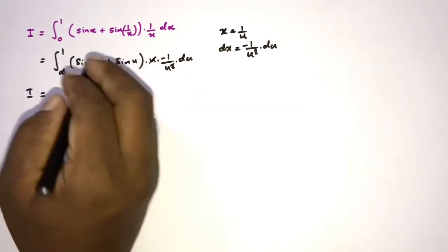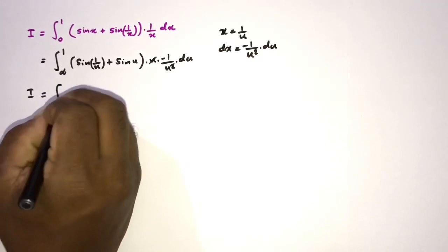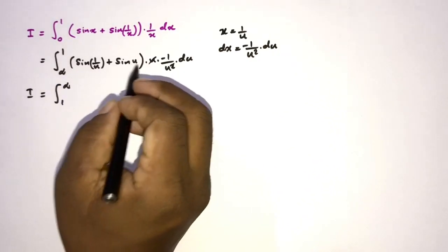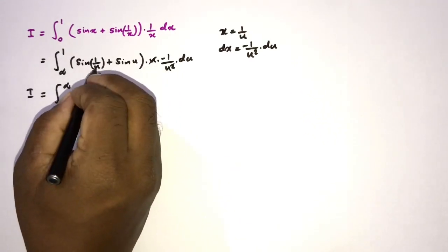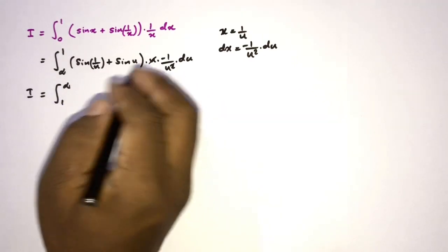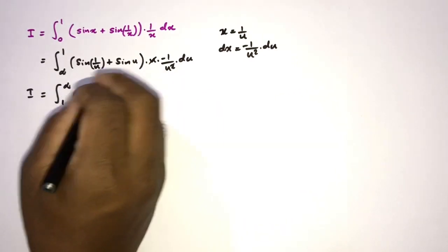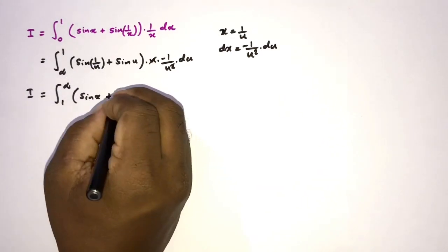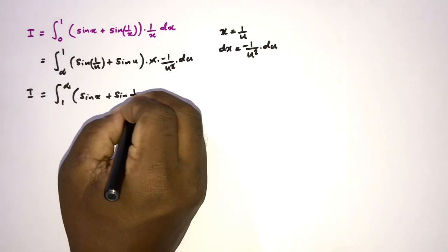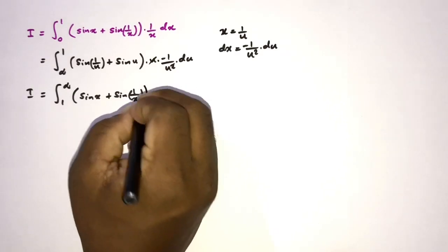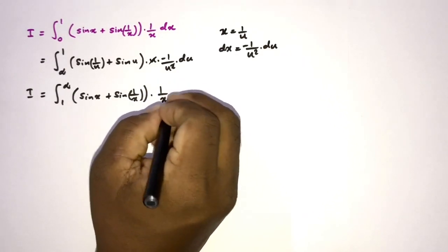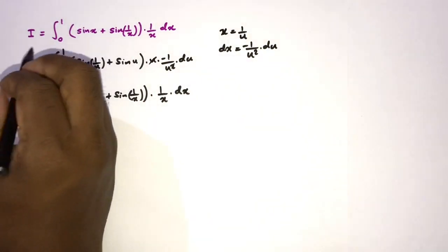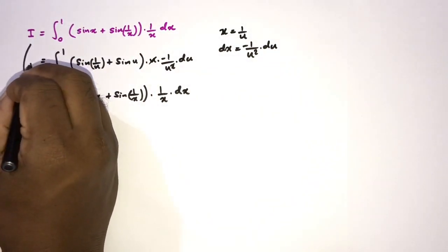Now we have a minus sign, so we swap the upper and lower limits — when we change the limits, the minus sign gets cancelled. We get the integral from 1 to infinity. Since a definite integral is independent of the variable name, we can replace u with x, giving sin(x) + sin(1/x) times (1/x) dx.